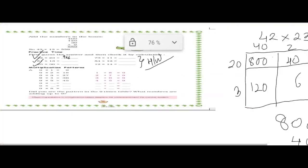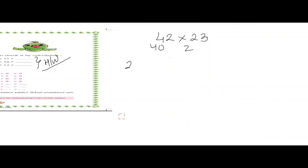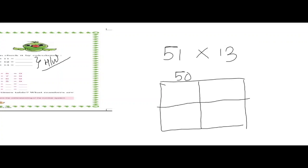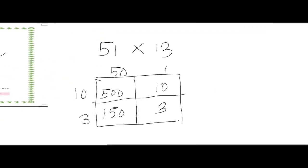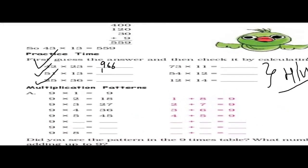In the same method we will do 51 into 13. Let us make a box. Adding all parts — 500 plus 150 plus 10 plus 3 — gives us 663. This is quite an easier method, children.